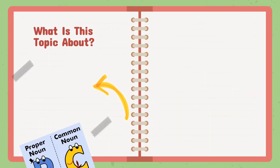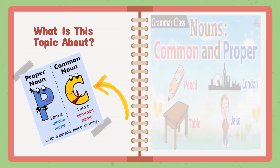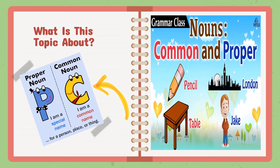What is this topic about? P and C. P for proper noun — I am a special name for a person, place, or thing. There are two types of nouns: common noun and proper noun. Examples of common nouns are pencil and table. Under proper noun, we have London and Jake.